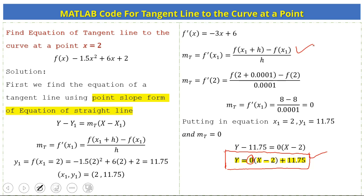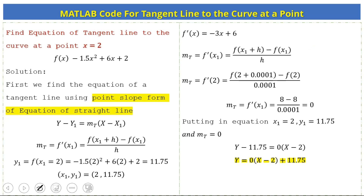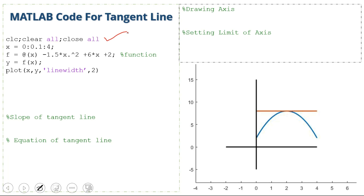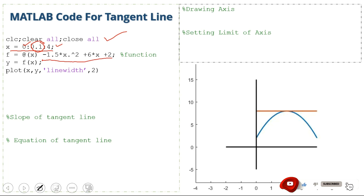In the MATLAB code, first we find the tangent and put it into the equation, then we plot the equation together with the curve f(x) = -1.5x² + 6x + 2. We start with the initial commands, then define the input vector x from 0 to 4 with increment 0.01.